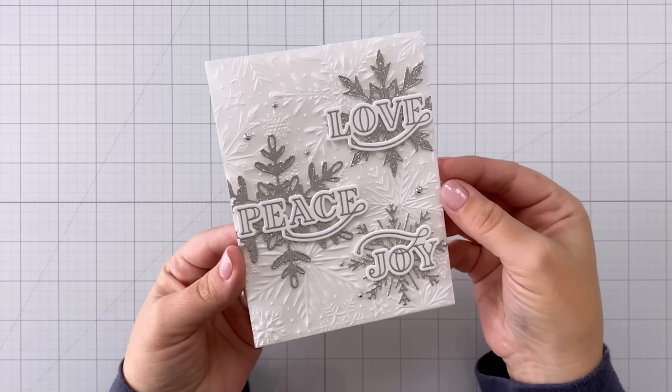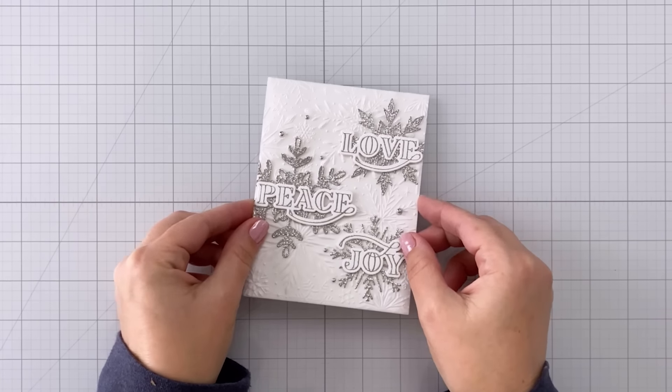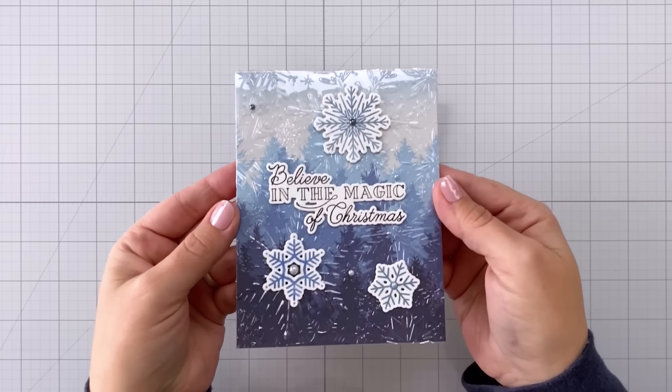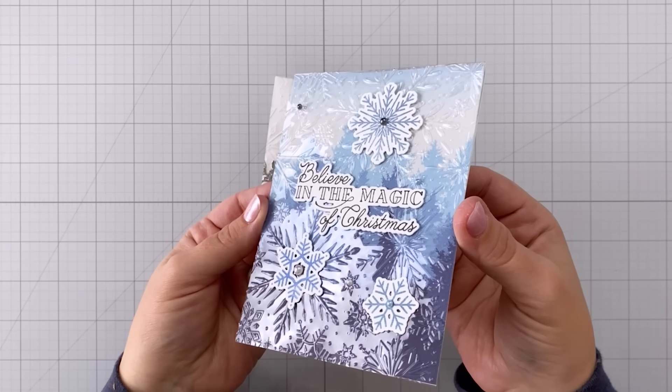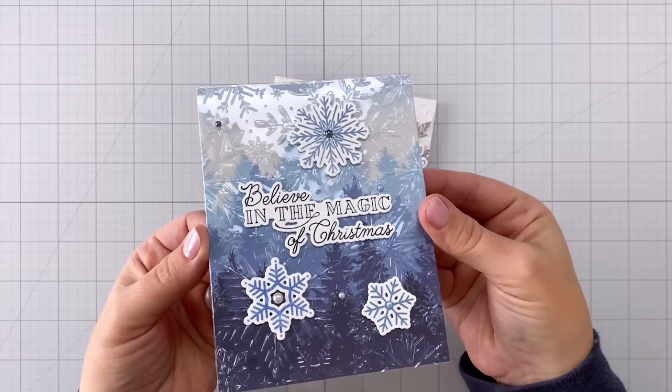This first one you're going to see I'm going to use vellum with my embossing folder and for the second one I am going to use acetate. So let's dive right in.